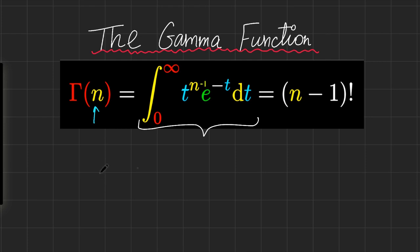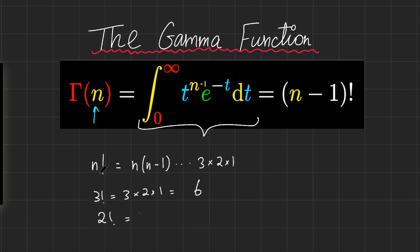Let's revise that first. For positive integers — keep in mind, positive integers — the factorial is defined as the product of all the numbers including itself down to 1. So that means n times n minus 1 times... 3 times 2 times 1. So 3 factorial is 3 times 2 times 1, which is 6. 2 factorial is 2 times 1, which is 2. And 1 factorial is simply 1. So n factorial for positive integers is defined as the product of all positive integers including itself down to 1.